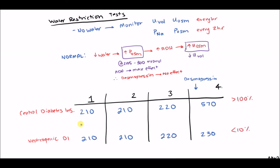A third scenario: water restriction produces no increase in urine osmolality, and after desmopressin it rises to about 300 — a 15% to 50% response. This is called partial central diabetes insipidus. The patient was producing some ADH but not enough; desmopressin bumps it a little further. It can be difficult to distinguish between partial central DI and nephrogenic DI, with the cutoff between 10% and 15%.